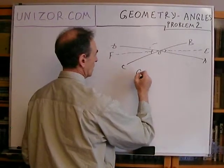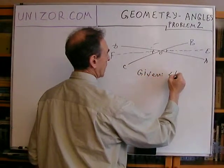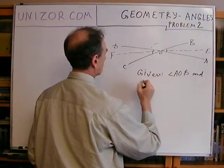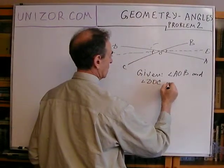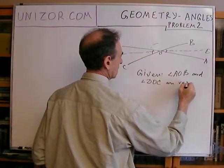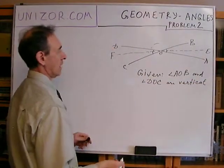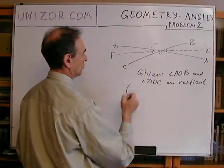Given that angle AOD and angle DOC are vertical. Now, what does it mean that it's vertical? It means that basically, I'll put in parentheses, that VOC is a straight line.